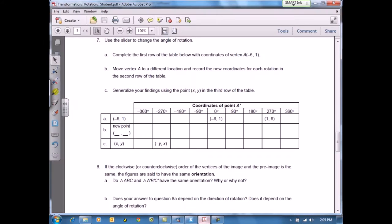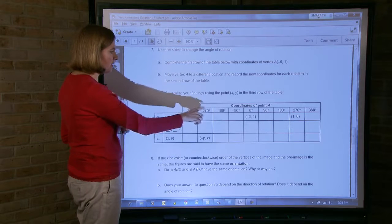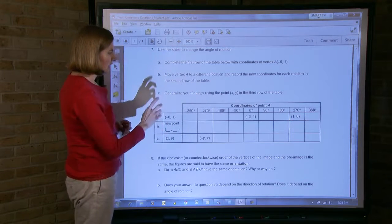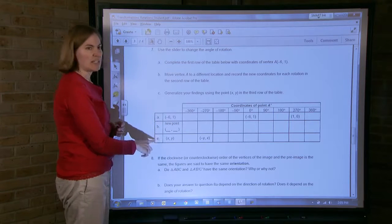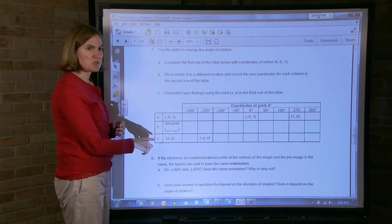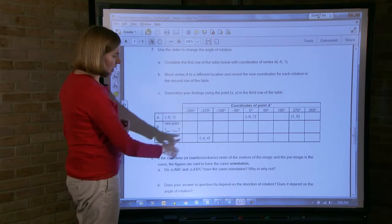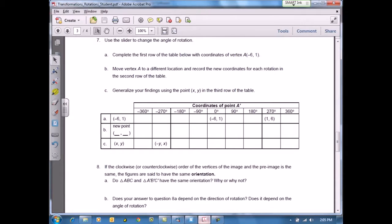The student activity with this has a great table for students to record information about what happens with their point as it goes through each one of these rotations about the origin and again ultimately entering into that practice of reasoning abstractly and quantitatively where they begin to generalize their results. I had a lot of students who really enjoyed being able to organize this information and really think about what was happening with that.